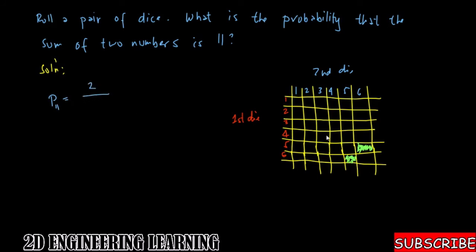Two over the number of outcomes. The number of outcomes here is the number of boxes, which is one, two, three, four, five, six—one, two, three, four, five, six. We have six times six, which is two over 36, or equal to one over 18.